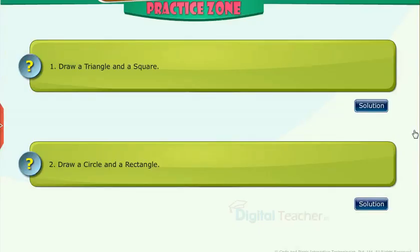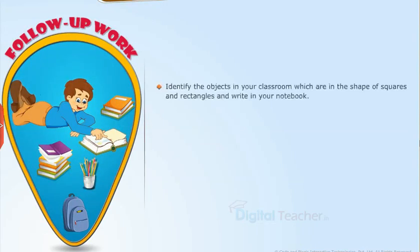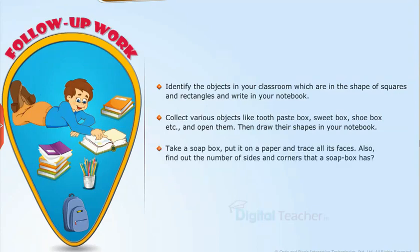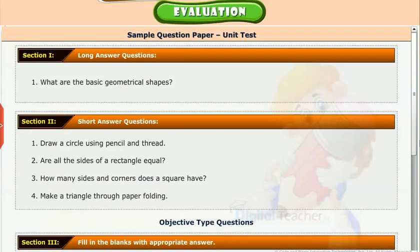Practice zone: Try to solve the questions on your own. Click solution to verify your answers. Follow-up work: Identify the objects in your classroom which are in the shape of squares and rectangles and write in your notebook. Collect various objects like toothpaste box, sweet box, shoe box, etc., and open them, then draw their shapes in your notebook. Take a soap box, put it on a paper and trace all its faces. Also find out the number of sides and corners that a soap box has. Evaluation: Take a sample unit test to check your understanding.